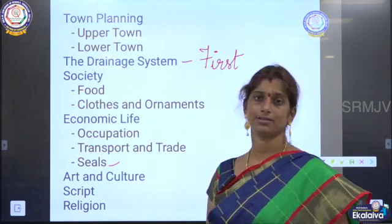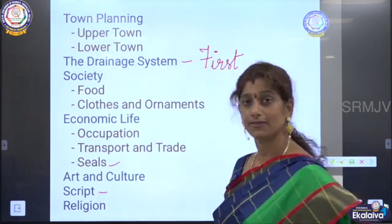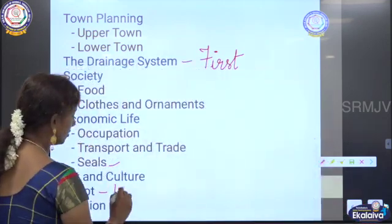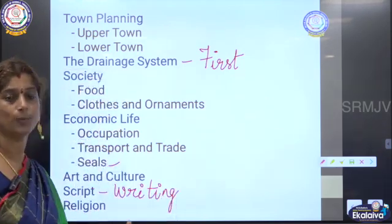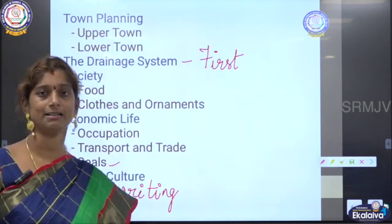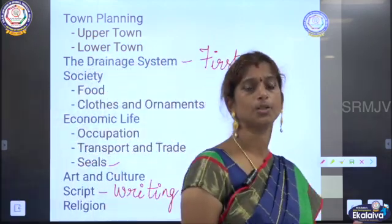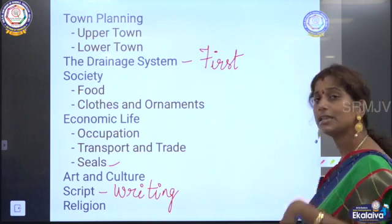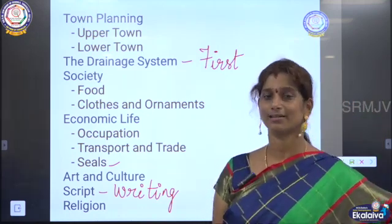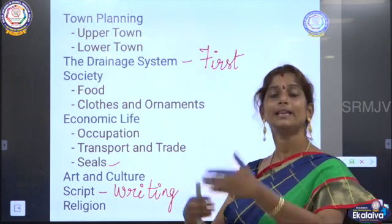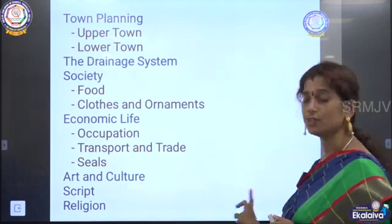And then about the art and culture, and then the script — writing was developed. Writing started to develop at this period. We are going to see what are all the scripts used by them, how the writing started in this period, and then about the religion — their way of worship, what are all the gods they worshipped. Previously, from the new stone age itself, the worship of mother goddess was there already. The same way how this religion or the religious beliefs developed, all these we are going to see in these main features.